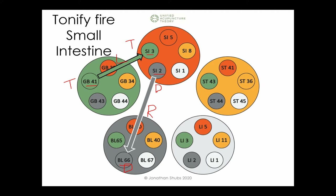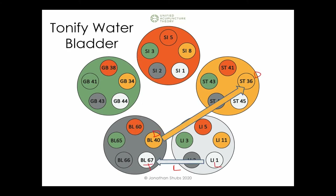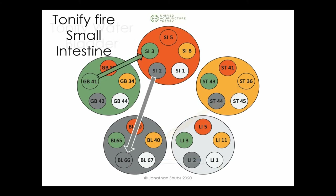The next aspect is addressing the question about pericardium and san jiao. In the UAT system, we don't associate pericardium and san jiao to the fire element. We have five general elements: fire, earth, metal, water, and wood. In the traditional original setup, earth is in the center, fire is above, metal and wood to the sides, and water below.